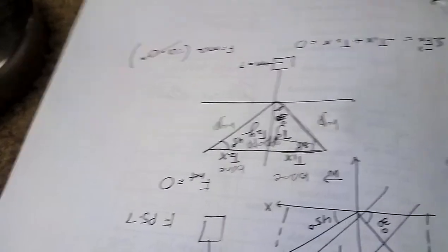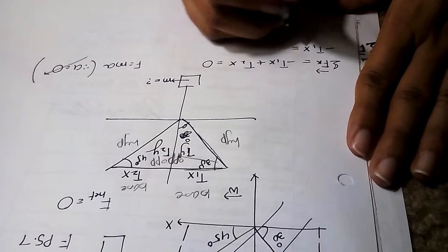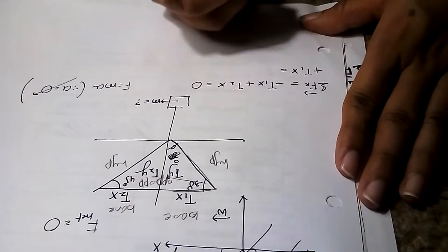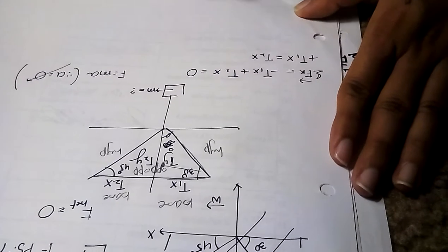Now let's work on our forces which are on x direction. I got only two forces on x direction: I got my negative t1x plus t2x equals zero, since my acceleration is zero. My f equals ma, and my acceleration is zero, that's why the whole thing goes to zero.